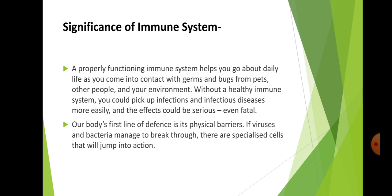Sometimes our immune system can overreact and even attack the body's own cells. This is what happens in the case of allergies like hay fever and autoimmune diseases, and it is why donated blood and organs must be very carefully matched. It's easy to take the immune system for granted because it does such a good job at keeping us free from infection around the clock. If you have a healthy immune system, look after it and it will look after you.